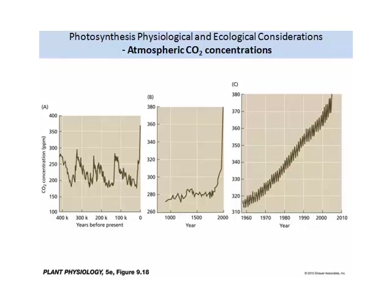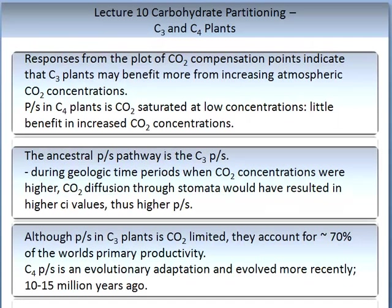The slide reflects atmospheric carbon dioxide concentrations at previous stages throughout history. The figure on the far left shows that many years ago, carbon dioxide levels fluctuated quite a lot. From 1960, there has been a gradual increase of carbon dioxide levels. Recent responses indicate that C3 plants may benefit from increasing atmospheric carbon dioxide concentrations, as photosynthesis in C4 plants is carbon dioxide saturated at low concentrations. Therefore, there will be little benefit to C4 plants with increased carbon dioxide concentrations.